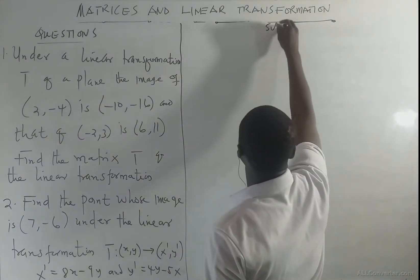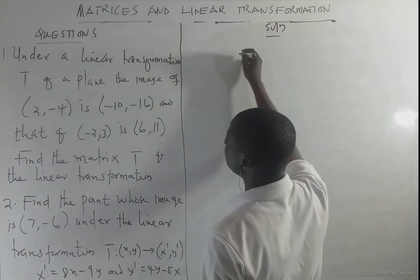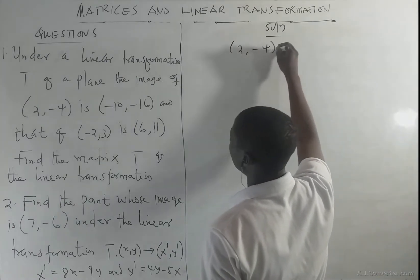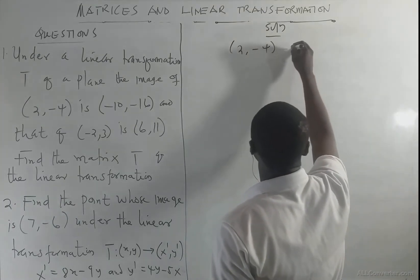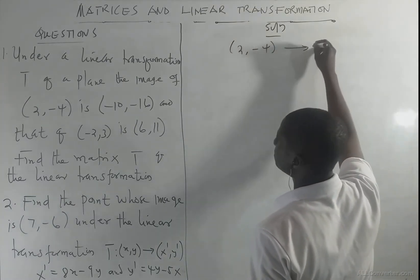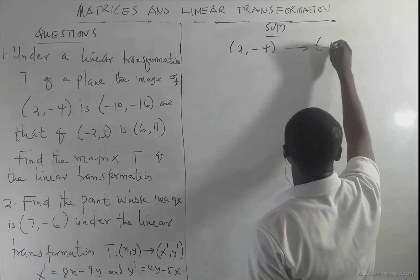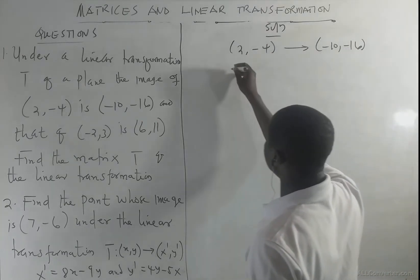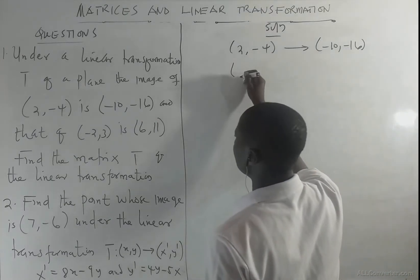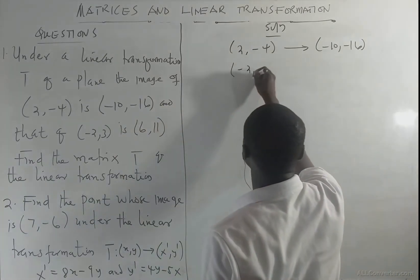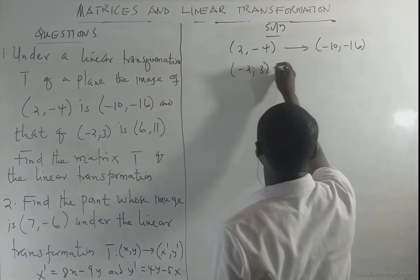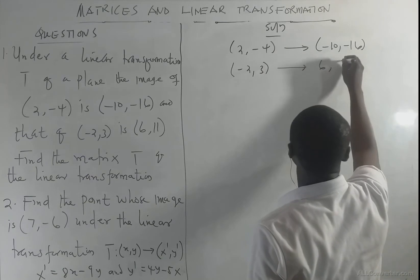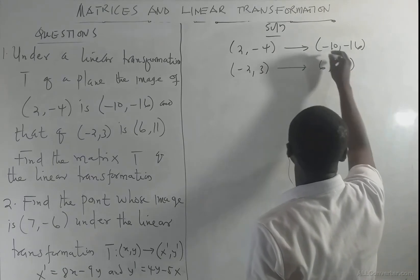For the solution to question one: the image of (2, -4) is (-10, -16), and the image of the second point (-2, 3) maps to (6, 11). We are given two points with their respective images and have to find the matrix T.